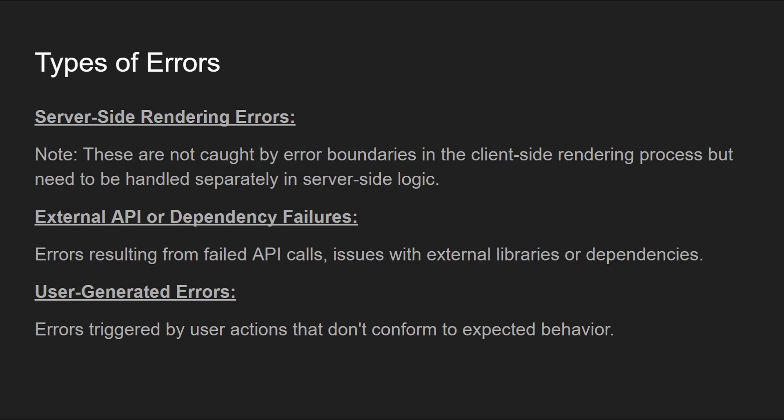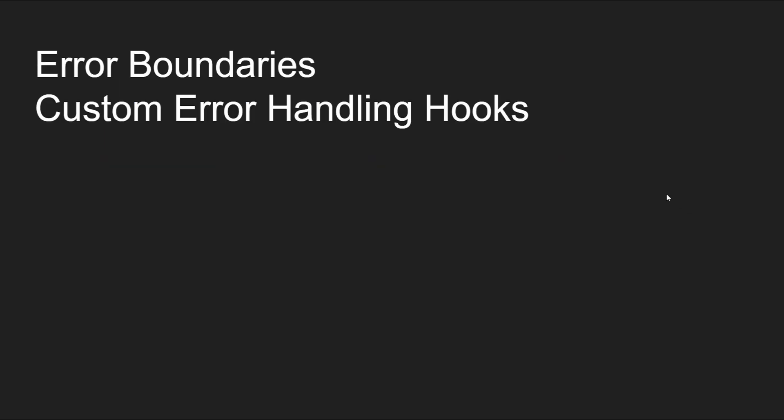Then there are server-side rendering errors, which cannot be caught by any client-side rendering process — they can only be handled based on the error message or status code returned from the server. There could also be external API or dependency failures, such as errors occurring in third-party libraries. Finally, there are user-generated errors — generic, unexpected errors triggered by user actions that you can't really predict.